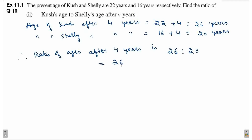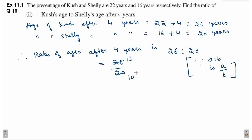This is equal to 26 divided by 20, because a is to b is a by b. So, yaha par in dono numbers ko 2 ke saath divide kar do. This is equal to 13 by 10. Therefore, ratio is 13 is to 10. So, this is the answer.